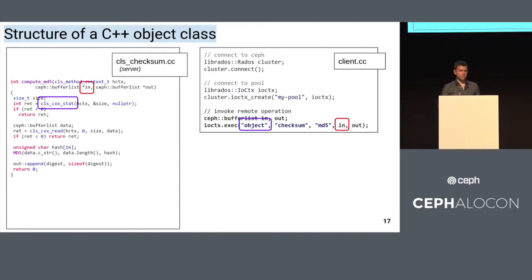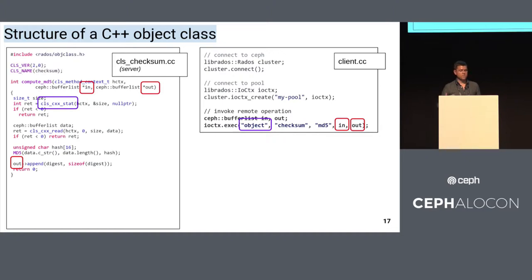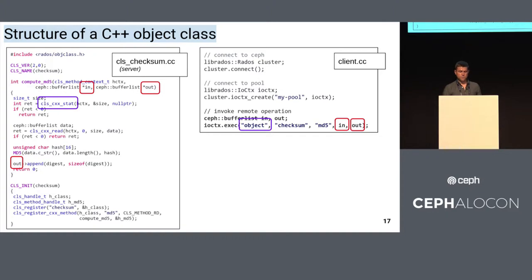After that, it's basically the same as before: we read the data into the heap, apply the MD5 sum, and insert the result into the output variable. Just like the input, Ceph takes care of all the details involved in networking, marshalling, and failover to make sure that output arrives back at the client. This is basically all there is to building object classes, though they can become much more complex. The only thing left is a little boilerplate: you include a header, compile in some metadata, and provide code that registers the object class when it's dynamically inserted into the running OSD.